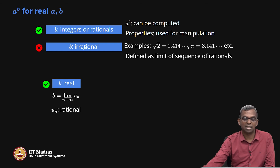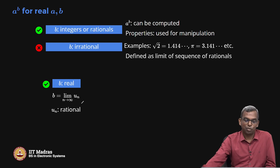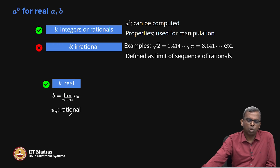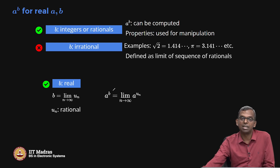For any real b — whether integer, rational, or irrational — there will be a sequence of rational numbers which converges to b. This is an important statement and essentially a definition of real numbers. Once I have this, a^b is defined as the limit as n tends to infinity of a^(u_n), where u_n is a sequence of rationals converging to b. Since any real number raised to a rational power is computable via the s-th root formula, this gives us an easy way to compute exponentials.